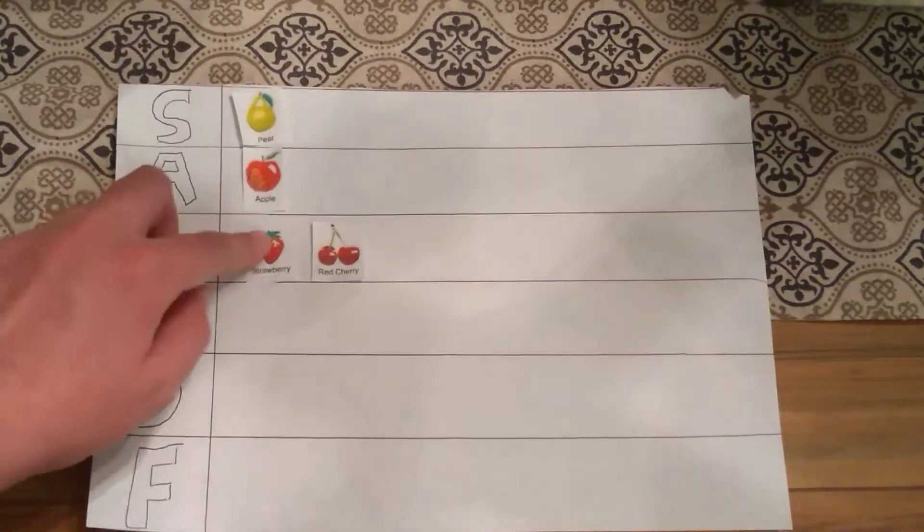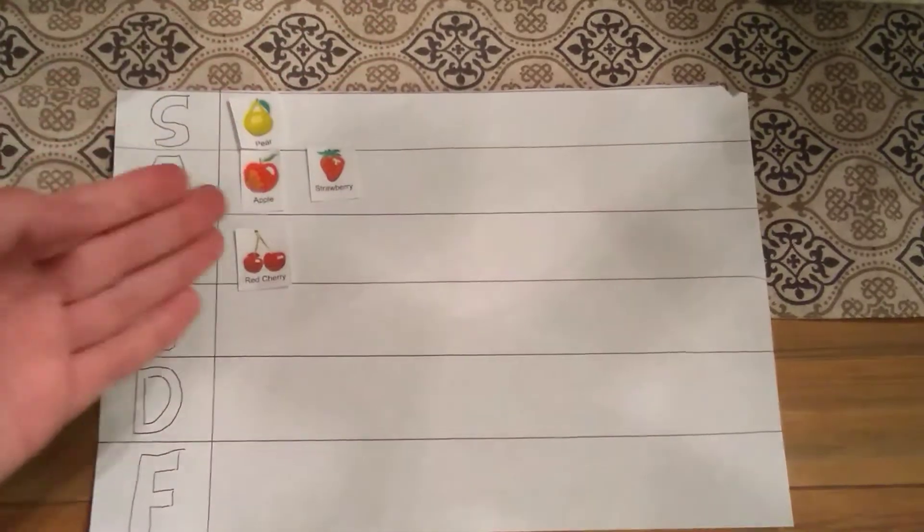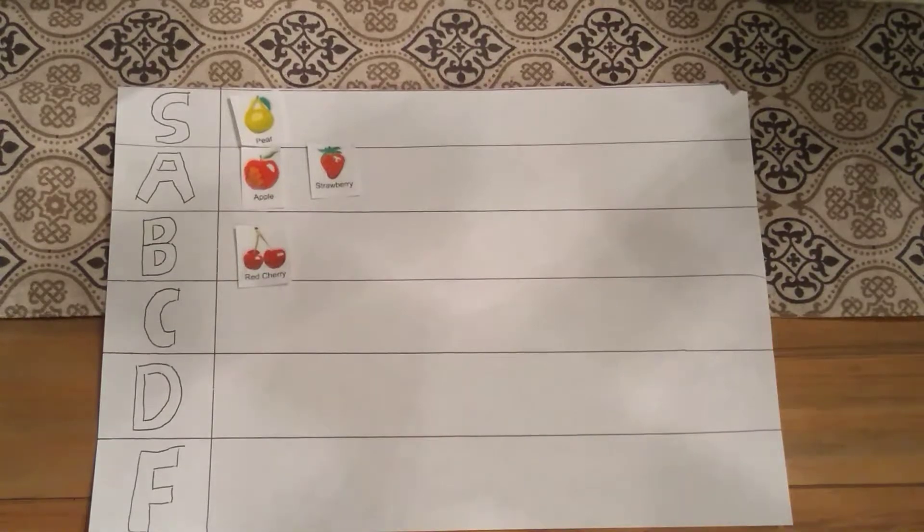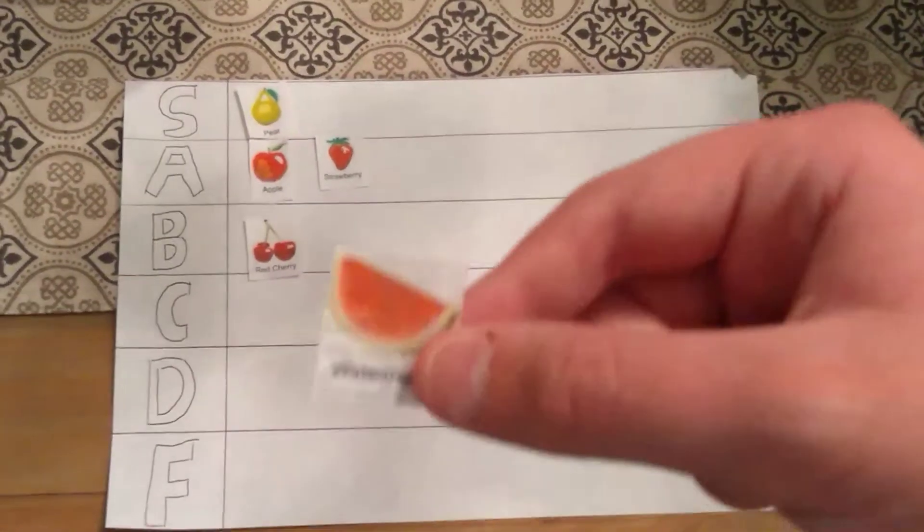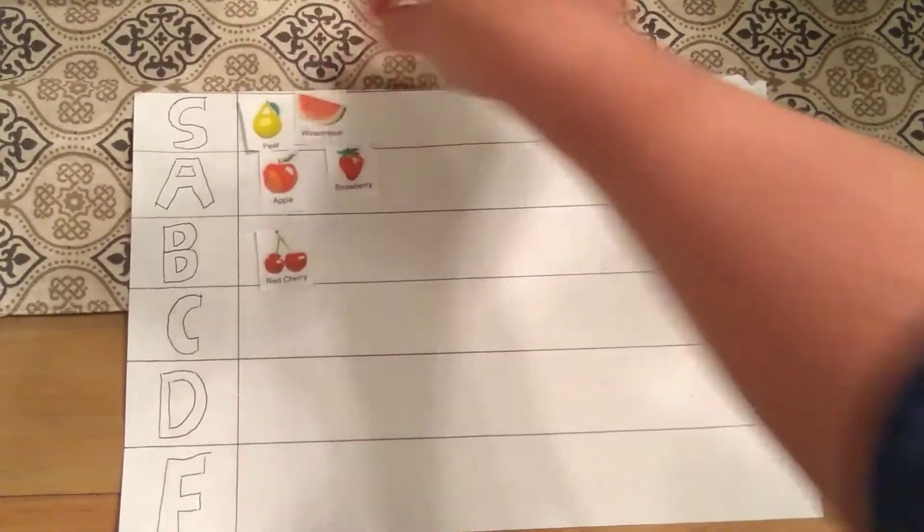Actually, wait. We're going to be moving strawberry up to the A tier. Because strawberry flavored things are amazing. Really great. Next up, we have watermelons. Watermelons are even better than pears. Which is why they'll be going slightly above it.